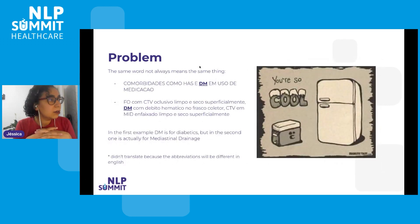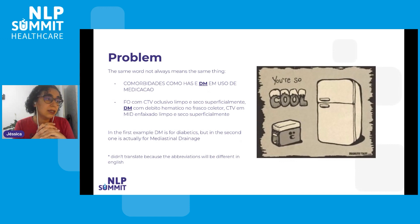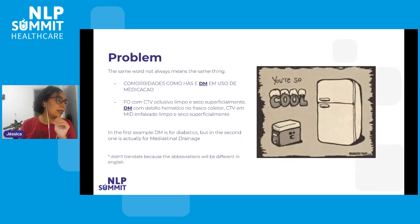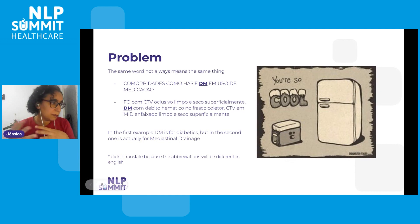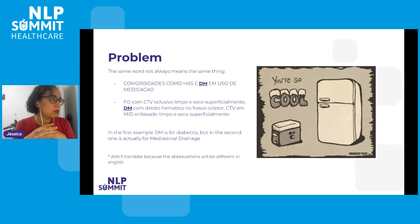The third and most difficult problem is when the same word means different things. This is very common in medical context, especially because they use a lot of abbreviations that have different meanings. I didn't translate these examples because translating would lose the meaning. The first sentence is about diabetics as a pathology. The second one uses DM, but it actually refers to mediastinal drainage — a procedure, not the disease. So we need to understand the context in which the word is being used to determine if it's a disease, a procedure, a drug, or a medication.